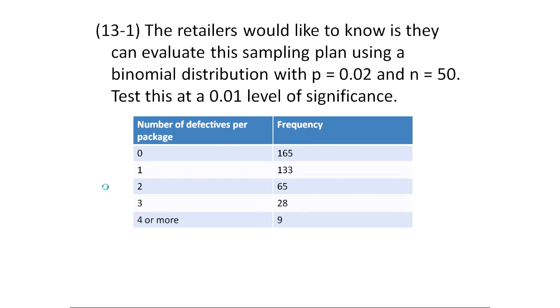They're wondering if they can evaluate this, if they can treat this as a binomial distribution with a probability of success of 2%. But remember, success here is whatever we're counting, so in that case it's number of defectives and n equal to 50. So it's saying for a particular package, can we treat it as the probability of a defect is binomial with a 2% chance? We're going to test this at a 1% level of significance.